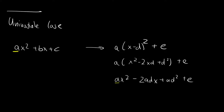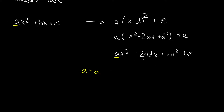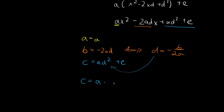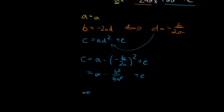Comparing coefficients, a equals a — that makes sense. The coefficient in front of x gives b equals minus 2ad. And lastly, c equals ad squared plus e. Rearranging for d gives d equals minus b over 2a. Plugging this into the expression for c, we get c equals a times minus b over 2a squared plus e. The a cancels, giving c equals b squared over 4a plus e, so e equals c minus b squared over 4a. These are our three equations to complete the square.